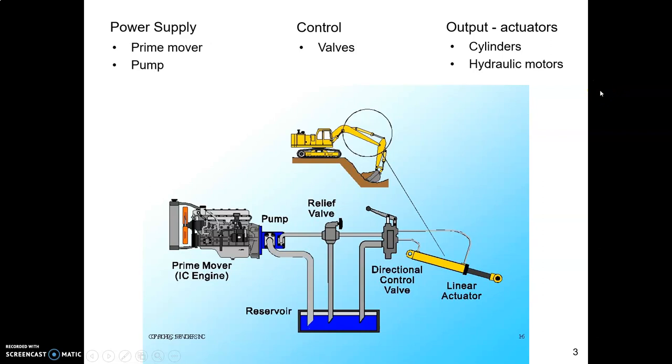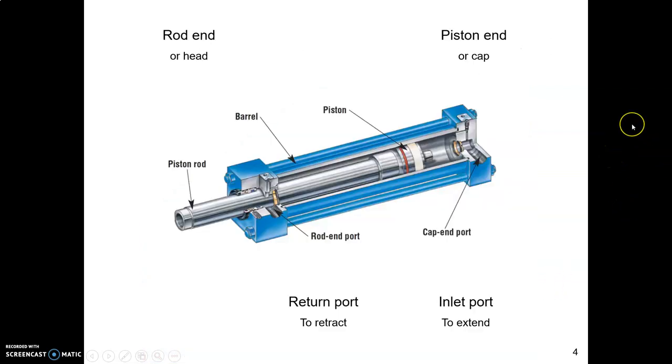Last time we looked at hydraulic motors, which are rotary actuators. This time we're looking at hydraulic cylinders, which are linear actuators. In other words, a cylinder takes the pressure in the hydraulic fluid and translates it into linear motion. It extends and retracts, it pushes and pulls.